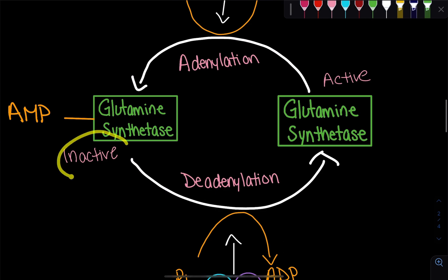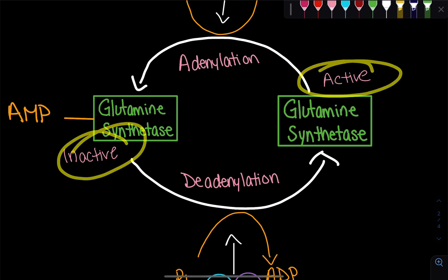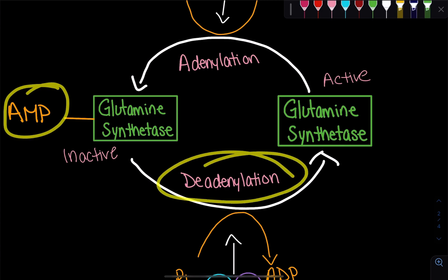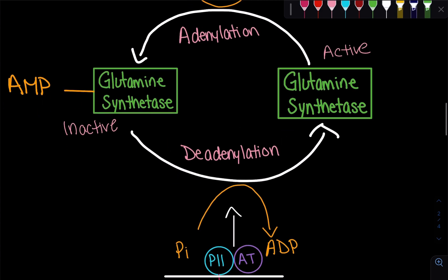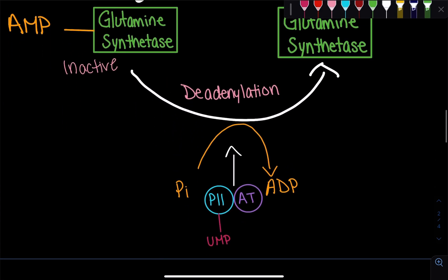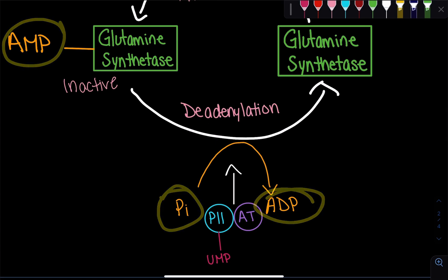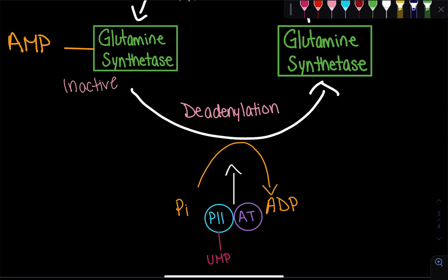Now let's say the enzyme is inactive but we need it to be active again. We have to remove the AMP — we need to de-adenylate. To de-adenylate, we take free inorganic phosphate, combine it with that AMP, and we lose ADP. So we go from one phosphate plus one phosphate to two phosphates total.